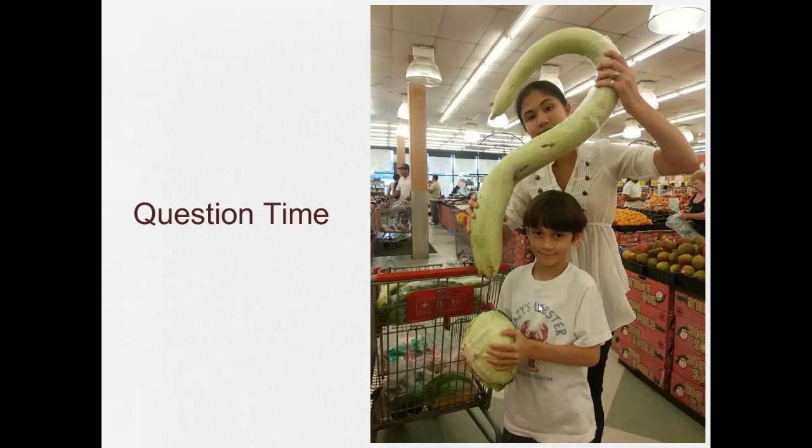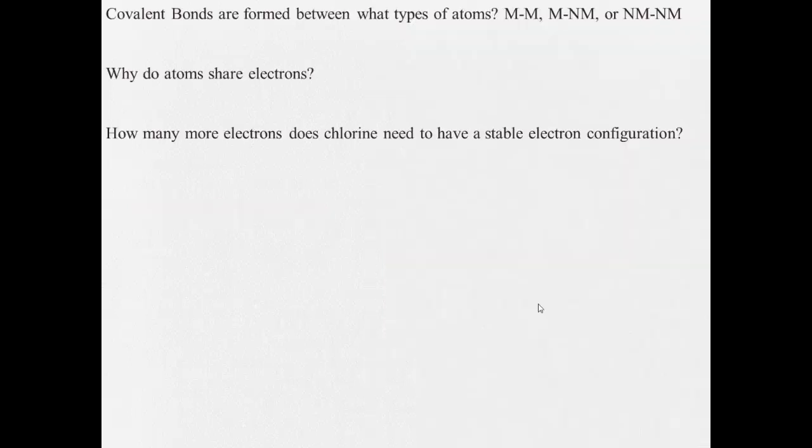All right, question time. Covalent bonds are formed between which type of atoms? Why do atoms share electrons? And how many more electrons does chlorine, a single chlorine atom, need to have a stable electron configuration? If you can't answer those, go back and watch the video again, and I will see you guys at school.